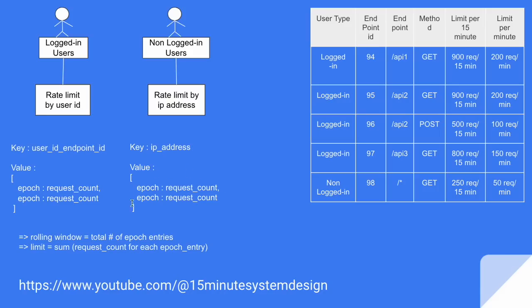The same can be done for non-logged-in users as well. The maximum total number of epoch entries in the value is going to be our rolling window, and the sum of request counts across all epochs is going to be our primary rate limit. To maintain the secondary rate limit, we check whether the request count at the epoch level exceeds the secondary limit. If it does, we block the request and make no entry. If not, we make the entry in the system.